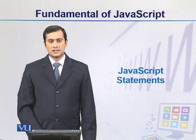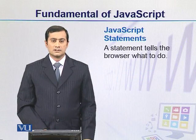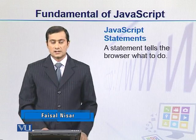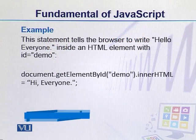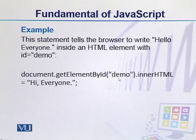JavaScript statements are programming instructions which are executed in an execution environment. In JavaScript, the browser is the execution environment. Here is a sample statement which performs a particular action — in this case, we have got an element with id 'demo' which has a function that changes the inner HTML value. This is called a statement which performs a complete work.